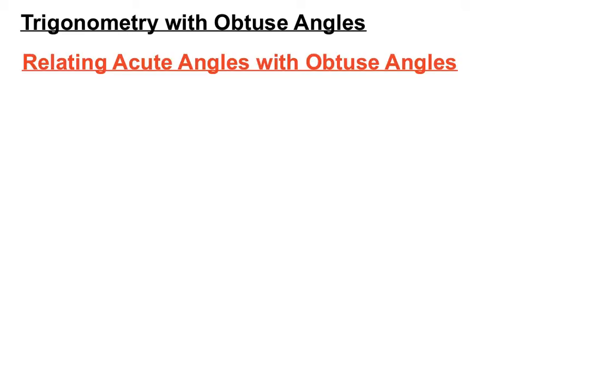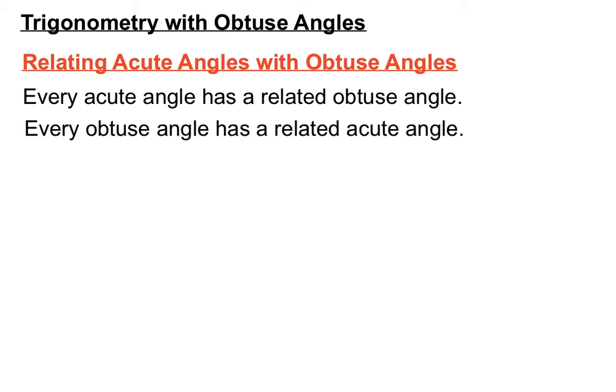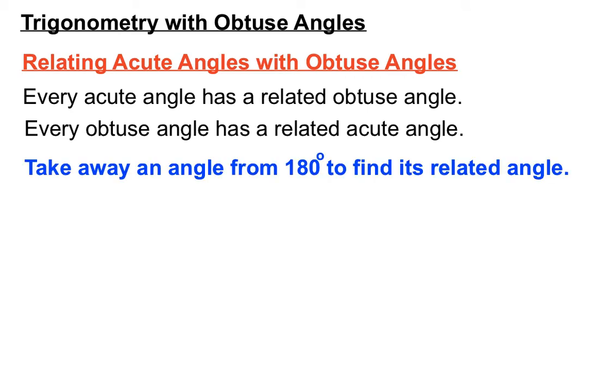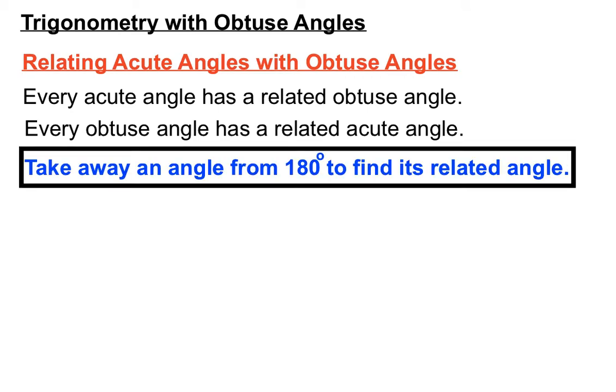We also have to remind ourselves that acute angles have angles that are the same size as them in the obtuse section. So every acute angle has what we call a related obtuse angle, like an equivalent obtuse angle. And every obtuse angle has a related or equivalent acute angle. And we find that pretty easily by taking away any angle from 180 degrees, we find its related angle that way.